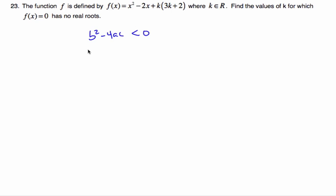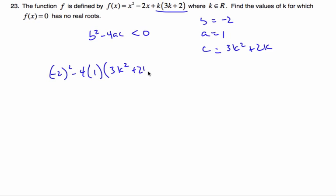So I have to solve this equation here. Well, I know that b is equal to negative 2, a is equal to 1, and c is this whole thing here, which is 3k squared plus 2k. To plug it into this equation, and so I get negative 2 squared minus 4 times 1 times 3k squared plus 2k is less than 0.